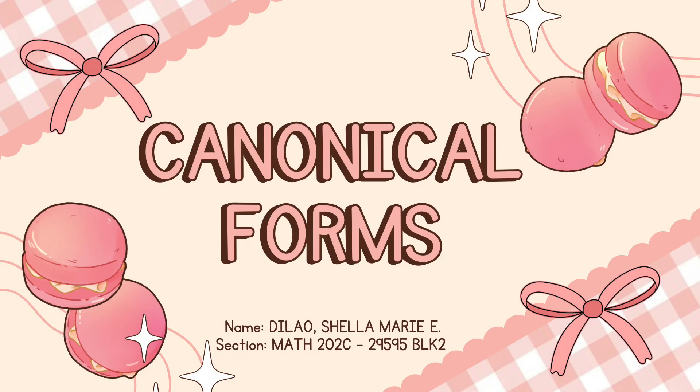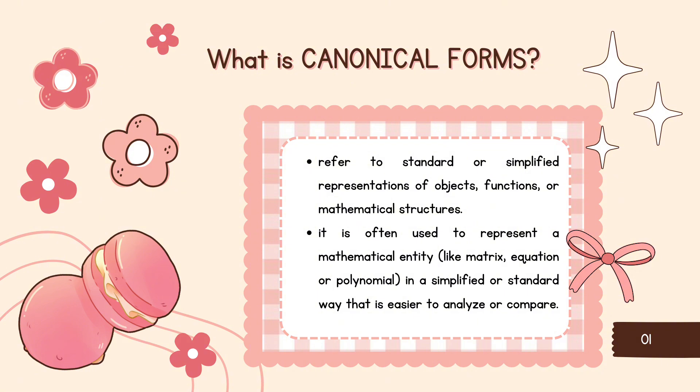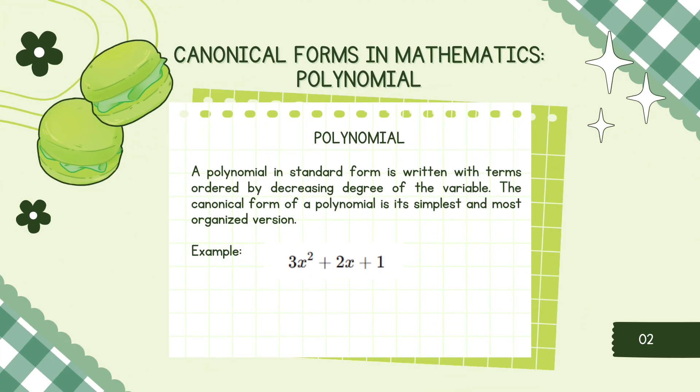Now let us start with our discussion. Our topic for today is canonical forms. Canonical forms refers to a standard or simplified representations of objects, functions, or mathematical structures. It is often used to represent a mathematical entity like matrix, equation, or polynomial in a simplified or standard way that is easier to analyze or compare. The goal of canonical form is to express something in a way that is unique, standardized, or simplified, making it easier to work with or compare different entities. Canonical forms are used across various fields of mathematics, computer science, and logic.